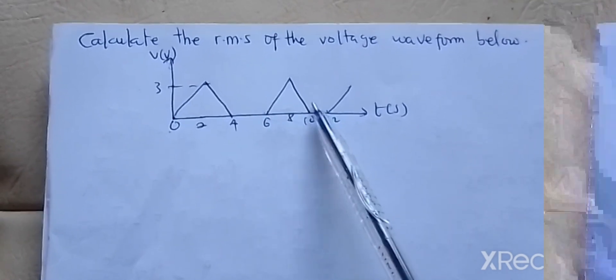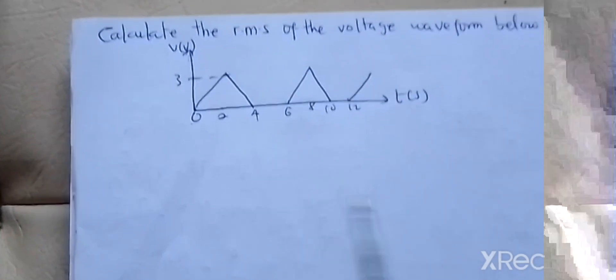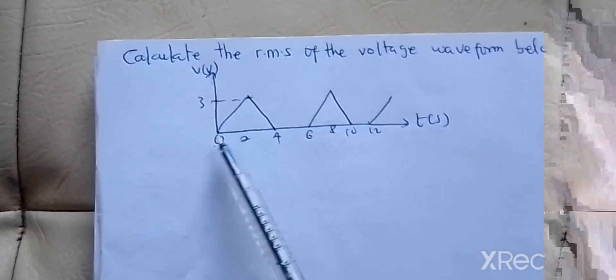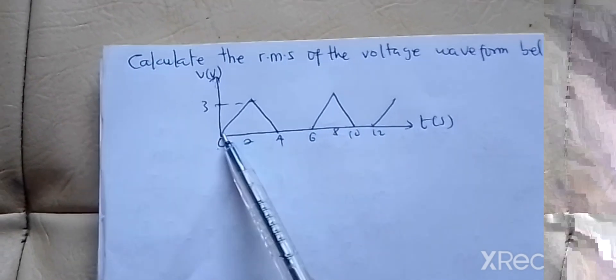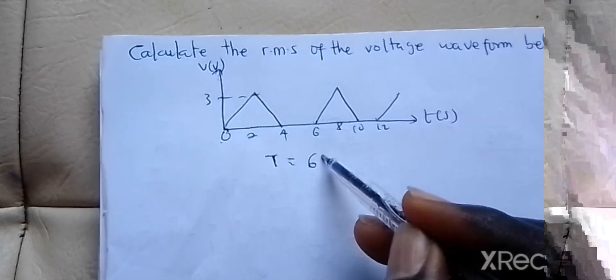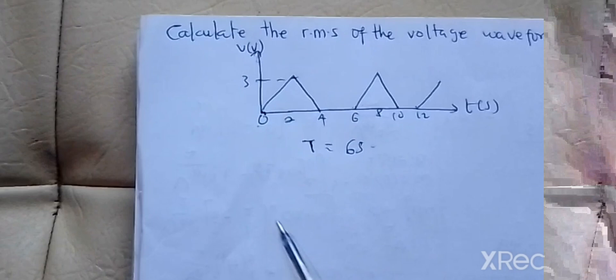The triangle is repeating itself in that order. To find RMS, you have to know the period. The period is the time it began and the time it begins again. It started at zero and is starting again at six, so our T is equal to six seconds.